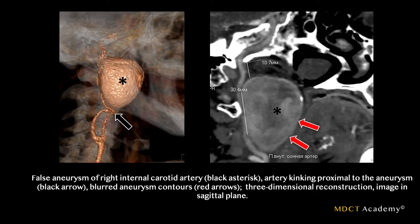This next case demonstrates a pseudo-aneurysm of the right internal carotid artery. The 3D volume-rendered image on the left shows the large pseudo-aneurysm marked with an asterisk, as well as kinking in the proximal aneurysm indicated by the black arrow. The curved MPR to the right stretches the entire vessel up to the cavernous sinus, showing the aneurysm neck is approximately 30 millimeters. If this were a true aneurysm, you would not see this heterogeneous contrast filling — the slow, heterogeneous filling here is characteristic of a pseudo-aneurysm.